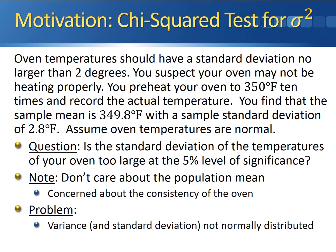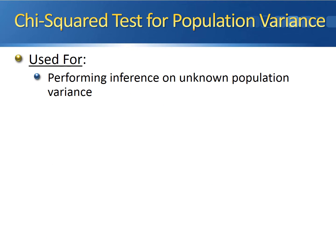Now, the problem that we have here is that the variance or the standard deviation is not normally distributed. So we need a different type of test to handle this situation. That test is going to be the chi-squared test for a population variance. The chi-squared test for a population variance is used for performing inference on an unknown population variance. Notice that this differs from all the other tests that we've done so far, in that before we were concerned about testing a population mean. We've moved on to a different parameter now: the variance.